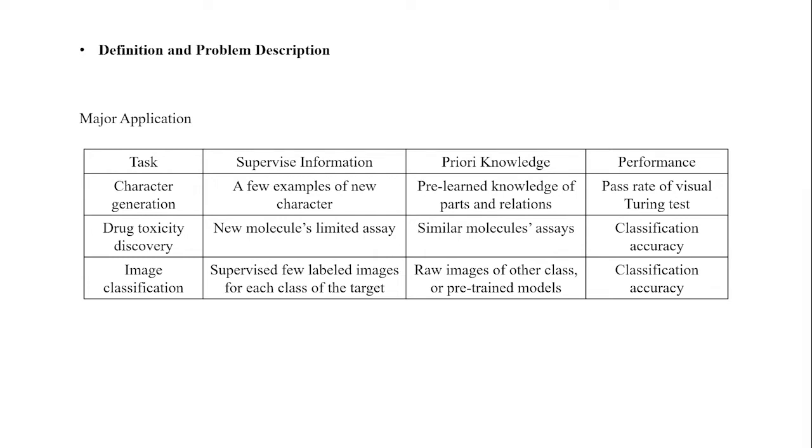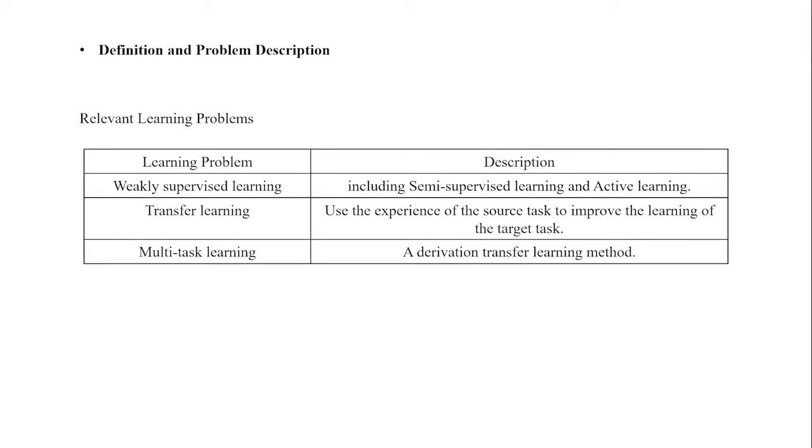In addition to computer vision applications, other fields have been gradually using the idea of few-shot learning, such as few-shot translation and few-shot language modeling in natural language processing. In the field of machine learning, there are many cross-domain learning problems with few-shot learning, including weakly supervised learning, transfer learning, and multitask learning. This section will clarify the development and differences between these problems and few-shot learning, so as to determine its applicable scenarios.